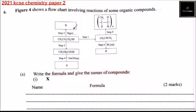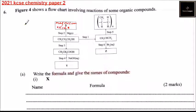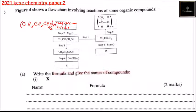The propanol reacts with magnesium to get compound X, which is a magnesium compound. The formula for X is CH3, CH2, CH2, O, CH2, Mg.